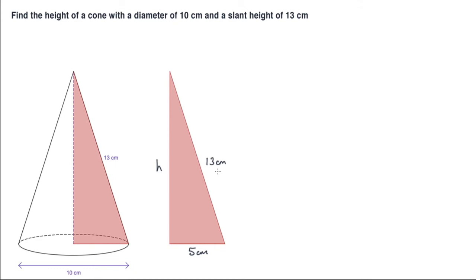But let's go ahead and actually use Pythagoras anyway. So the height squared would be equal to 13 squared minus 5 squared.